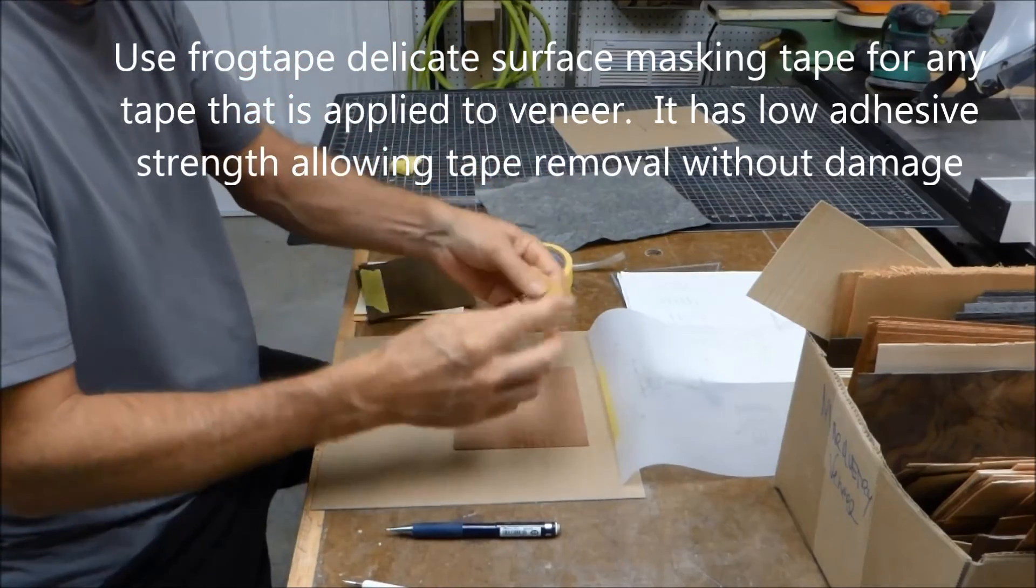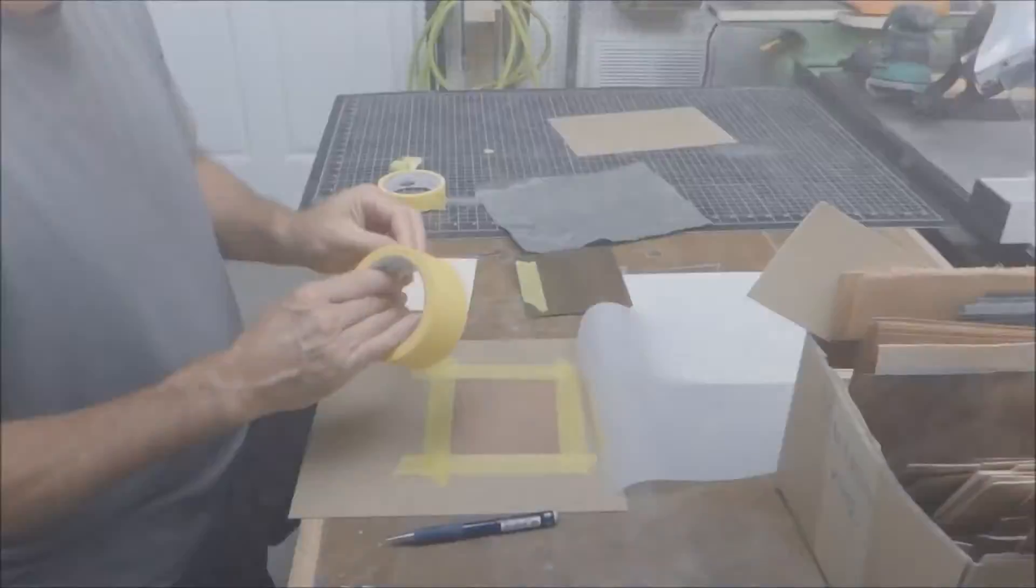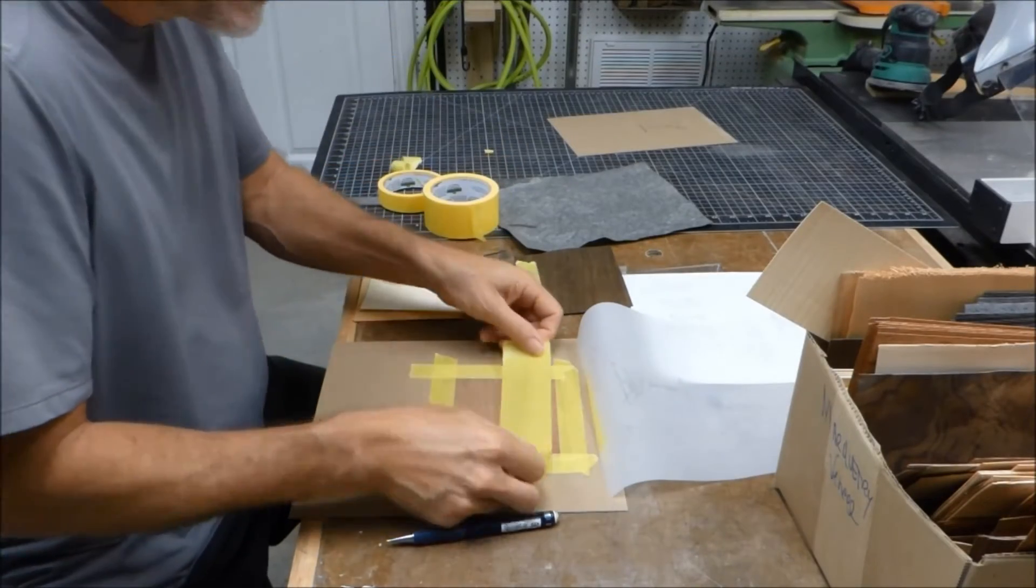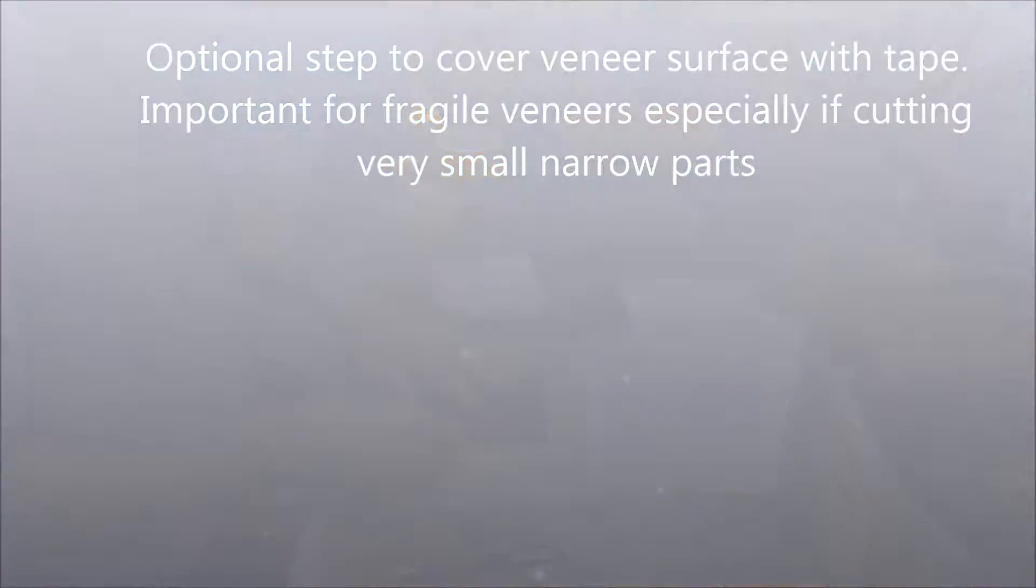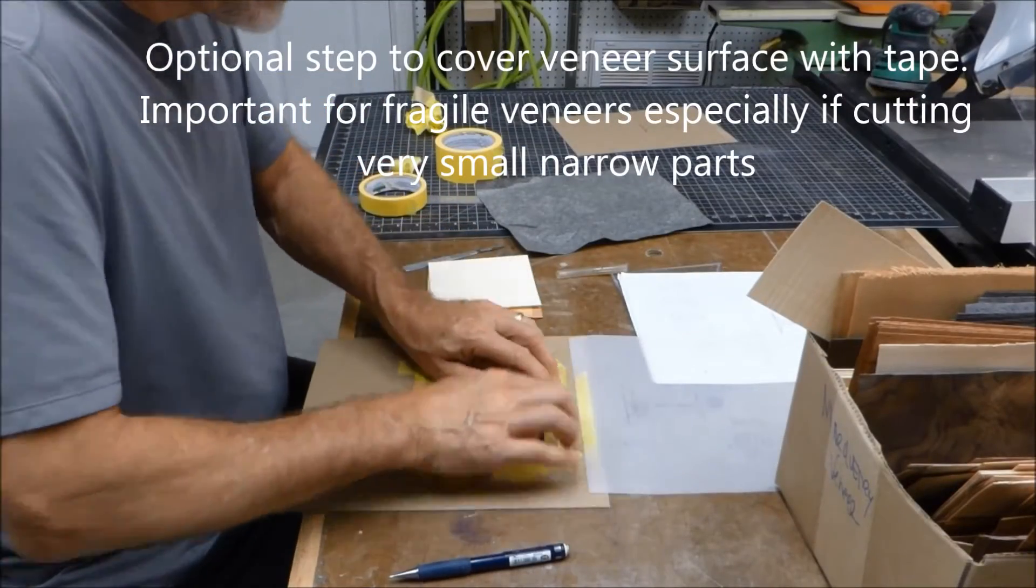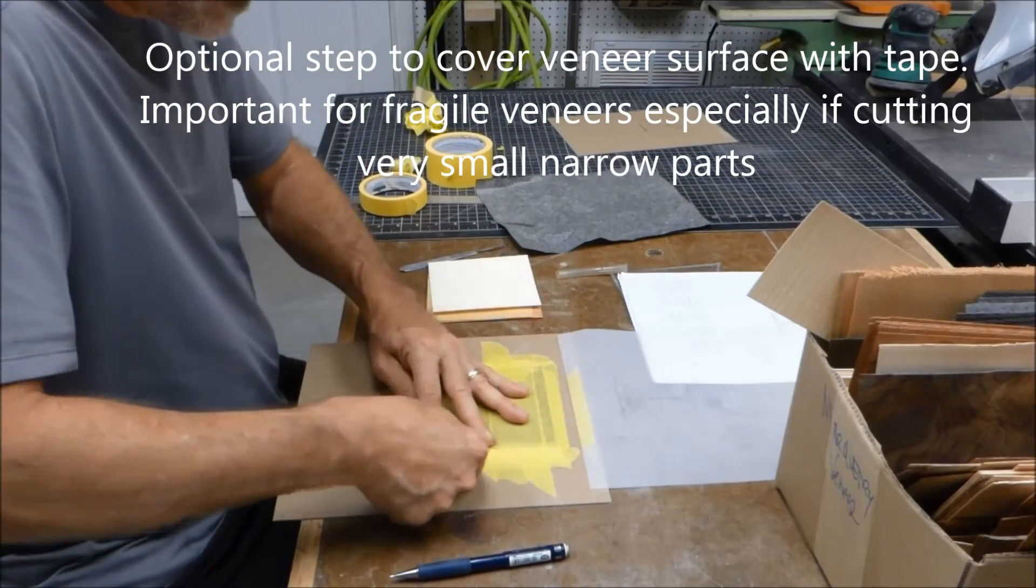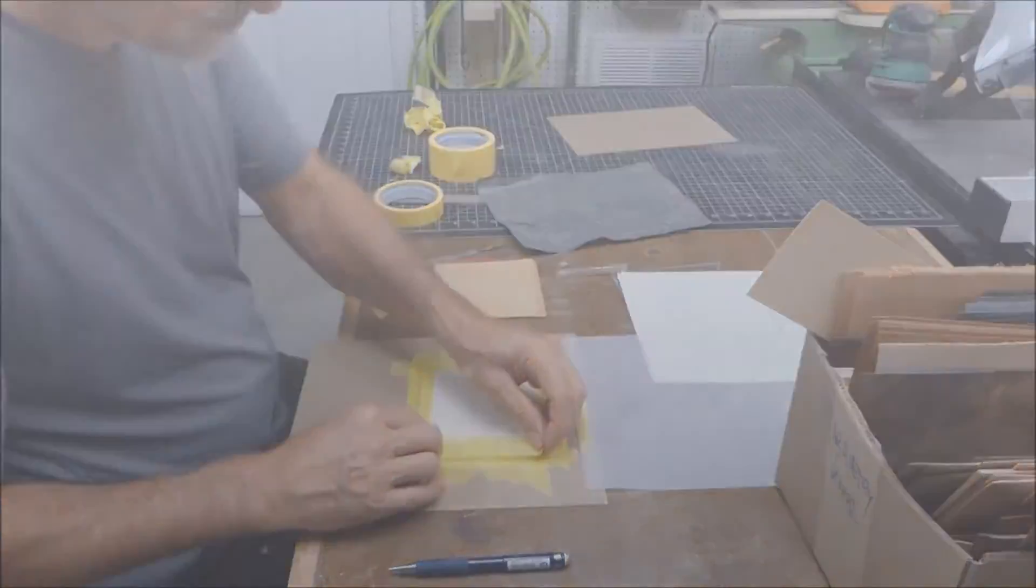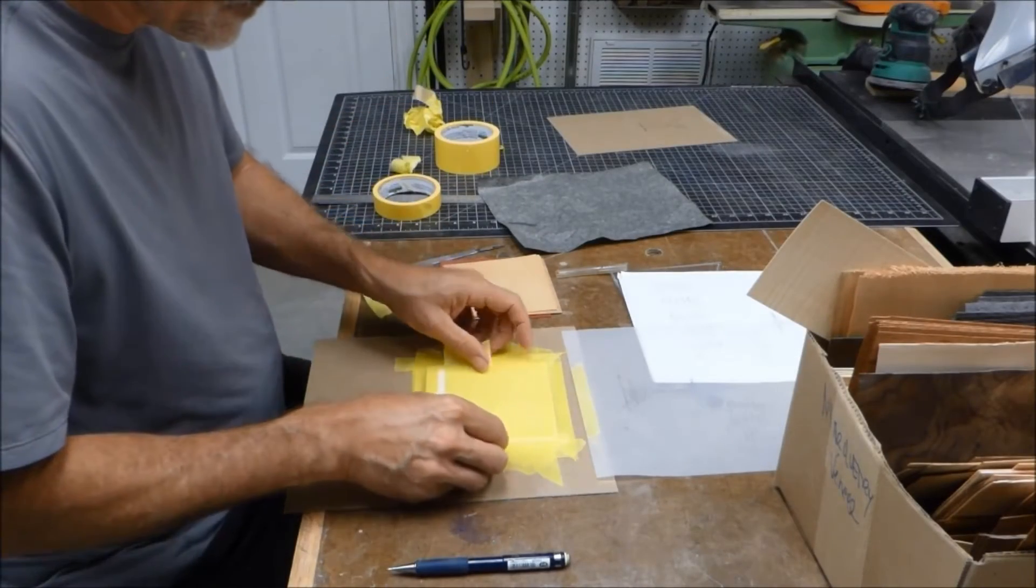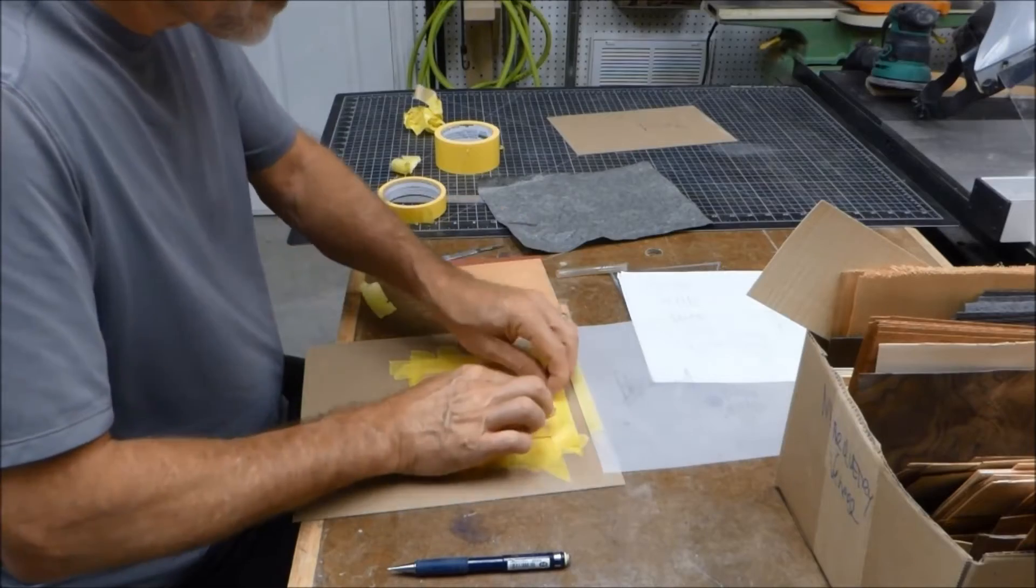Here I'm using a special tape. You can buy it at Menard's. It's frog tape, delicate surface masking tape. What's special about this stuff is it has a pretty low adhesive strength compared to regular masking tape. That's important to avoid damaging veneers, because later on when we have to remove this tape, too strong a tape will start ripping up fibers from the veneer. The other thing I'm doing, you can see that after I taped down the veneer, I covered it with a complete layer of tape. Now that's an optional step. Particularly for delicate veneers, and particularly if you're cutting pretty small and particularly narrow parts or sharp points, that really strengthens the veneer so that it won't break.